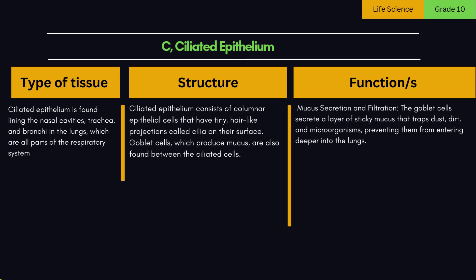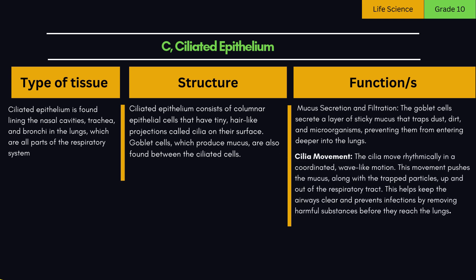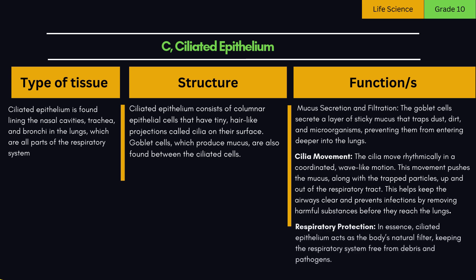Functions of ciliated epithelium: 1. Mucus secretion and filtration — the goblet cells secrete a layer of sticky mucus that traps dust, dirt, and microorganisms, preventing them from entering deeper into the lungs. 2. Cilia movement — the cilia move rhythmically in a coordinated, wave-like motion. This movement pushes the mucus, along with the trapped particles, up and out of the respiratory tract, helping keep the airways clear and preventing infections. 3. Respiratory protection — ciliated epithelium acts as the body's natural filter, keeping the respiratory system free from debris and pathogens.